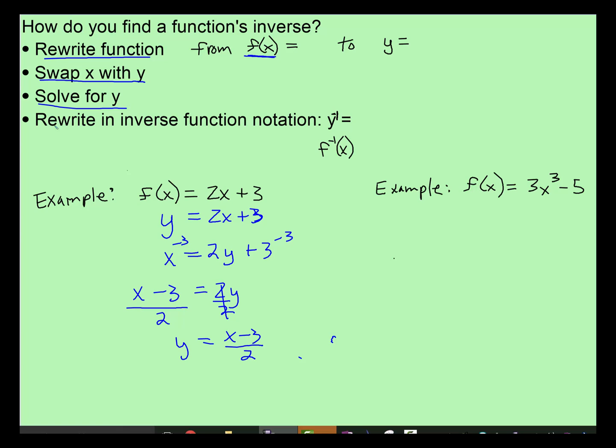And finally, so we solved that. Finally rewrite in inverse notation. And here is the inverse notation. So we would rewrite that as f with that superscript. It's not really a negative 1 exponent, it just looks like a negative 1 exponent, but that's not what it's intended to be, is equal to x subtract 3 over 2. It could be rewritten like this. They mean the same thing.